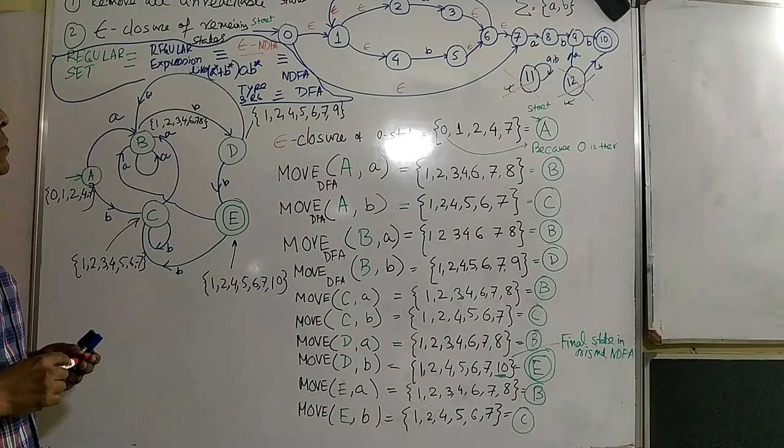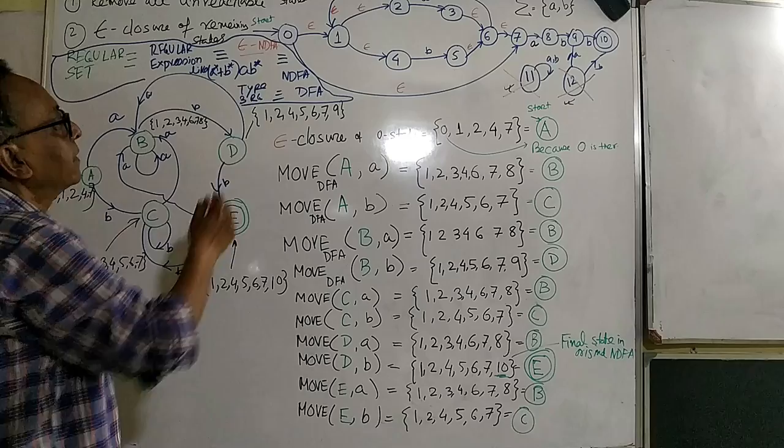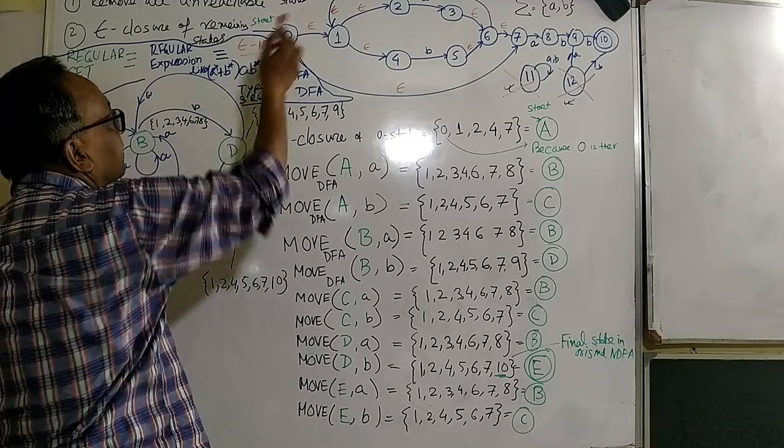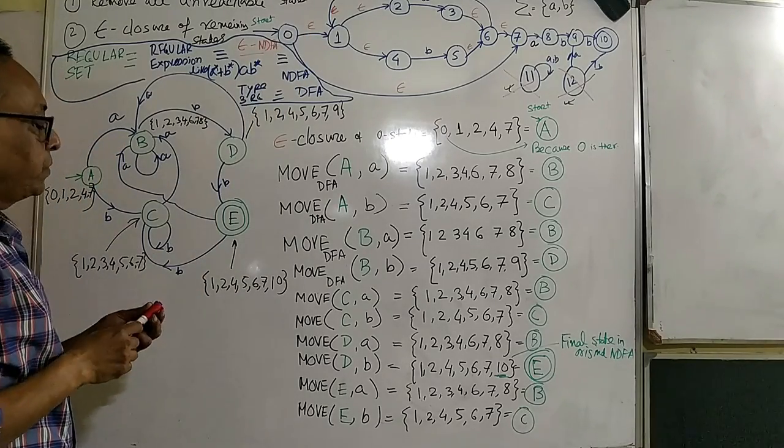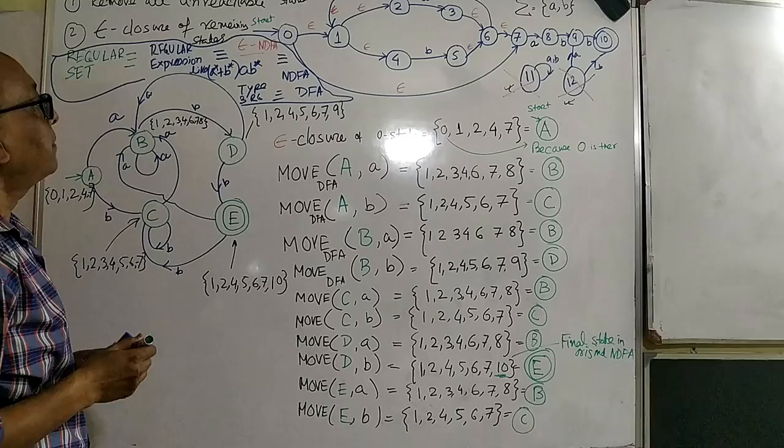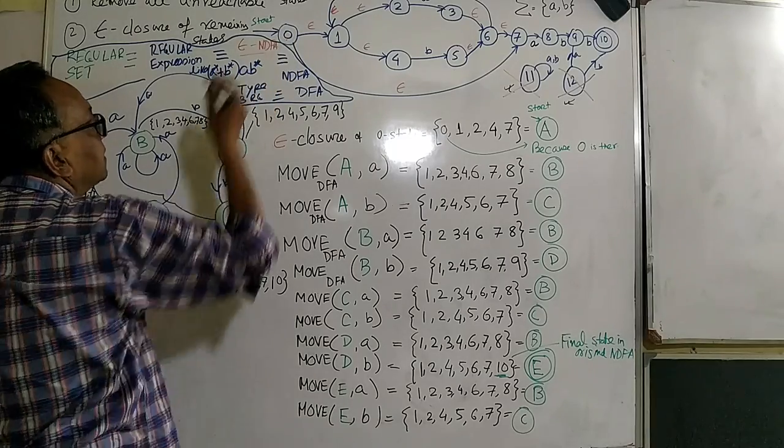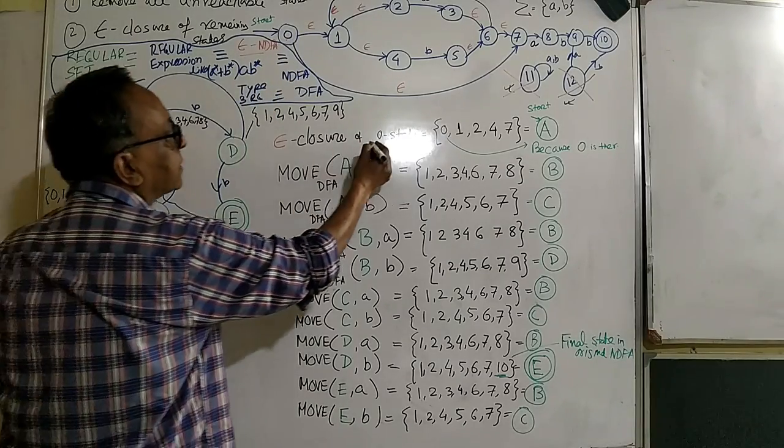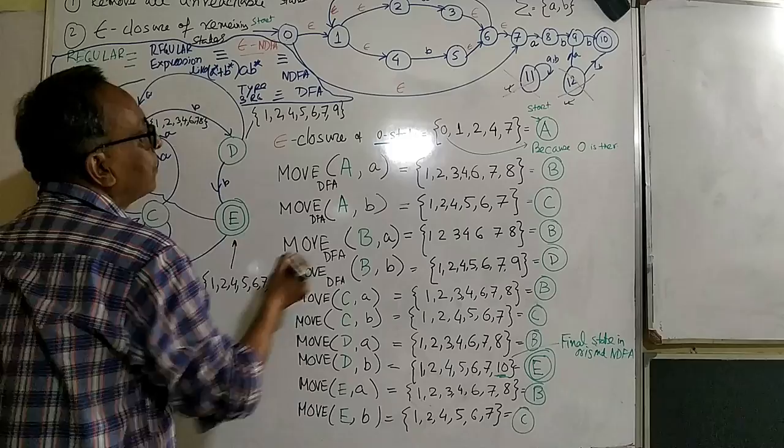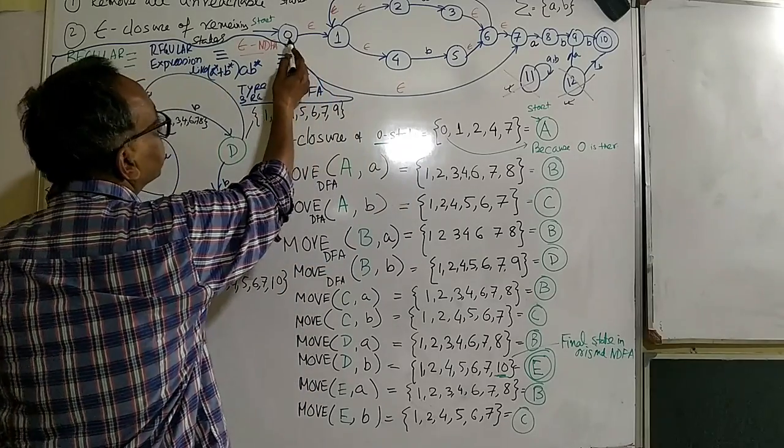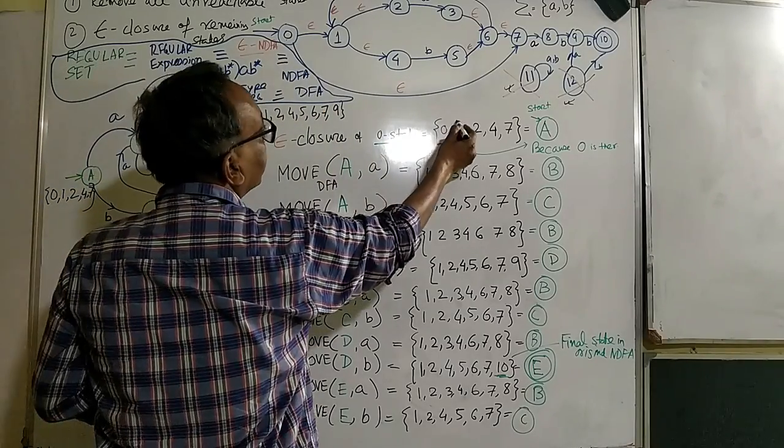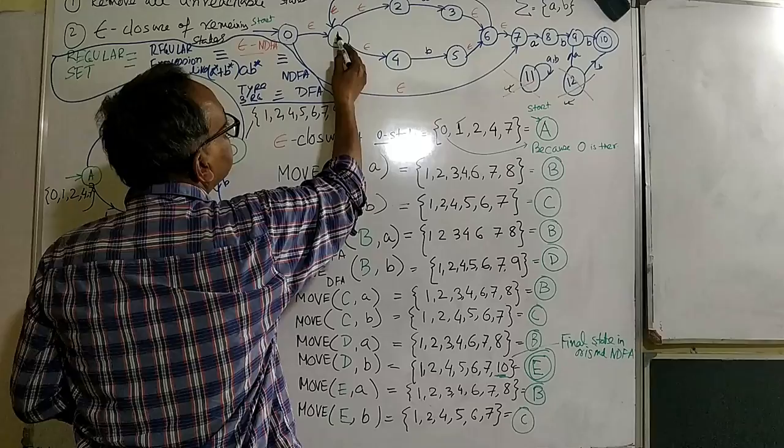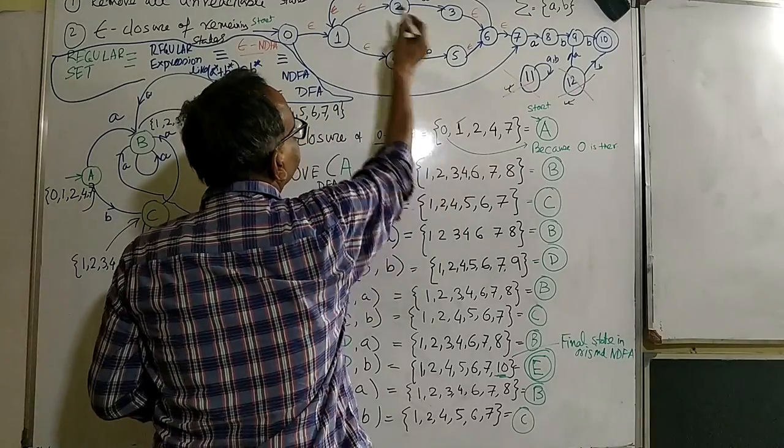Then what is the first state we should do? We should take the, this is the NFA definitely because there are several epsilon transitions. So we should take the first the epsilon closure of the start state. This is the epsilon zero. So epsilon closure of the zero state, definitely zero. Because epsilon closure one, this one should be there. Then because one is there, two is there. Because it is epsilon, two.